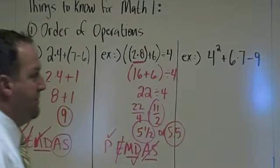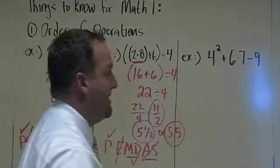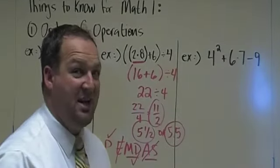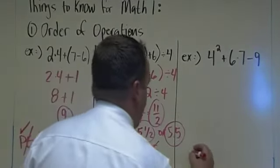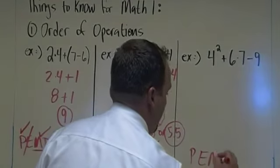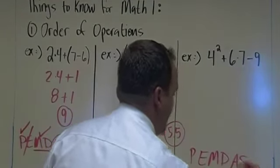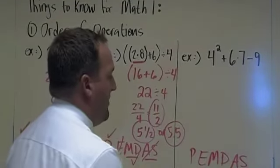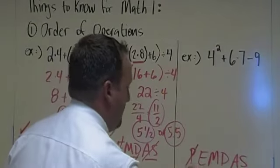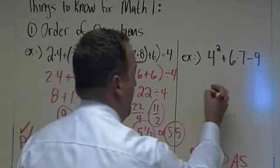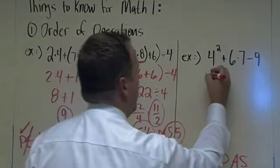The last problem says 4 squared plus 6 times 7 minus 9. Order of operations. Please excuse my dear Aunt Sally. Parentheses. No parentheses in this problem. Exponents. There is an exponent. We have 4 squared. 4 squared is 4 times 4, which is 16.